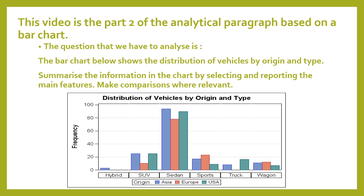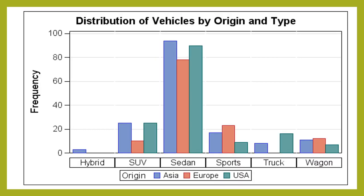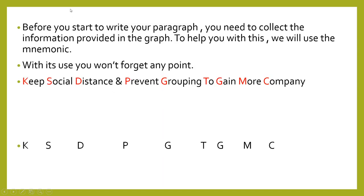The question asks us to summarize the information from the chart by selecting and reporting the main features, making comparisons where relevant. We can see the graph — on the x-axis we have hybrid, SUV, sedan, sports, truck, and wagon as categories by origin, and on the y-axis we have the frequency. Before we start, we will use the mnemonic to collect all the information provided in the graph.